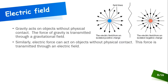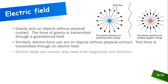Electric charge is distributed across what's called an electric field. Just like there's a gravitational field through which the force of gravity is transmitted, the force associated with electric charge is transmitted through an electric field. This is why we don't need physical contact to feel the effects of an electrical field — the same as with gravity. Because electric fields transmit force, they are vectors with magnitude and direction.